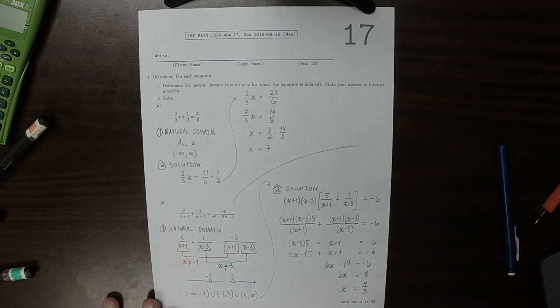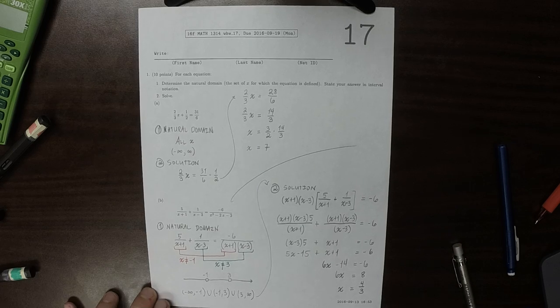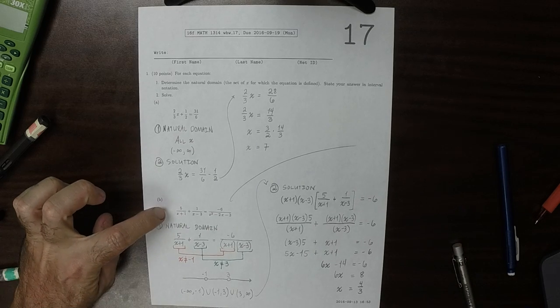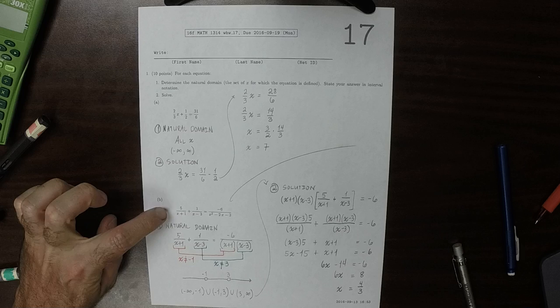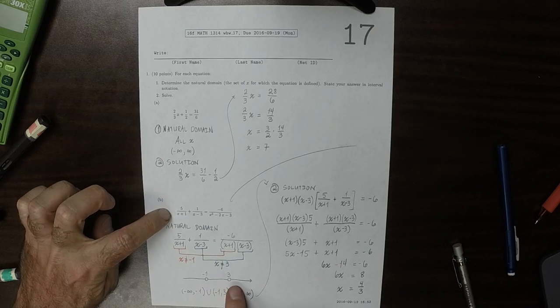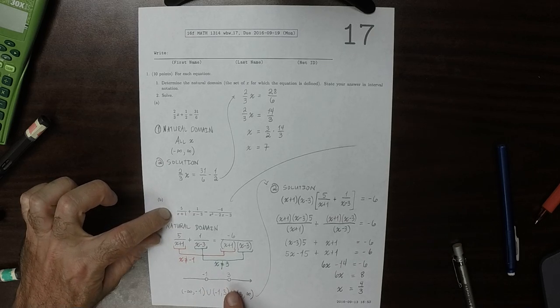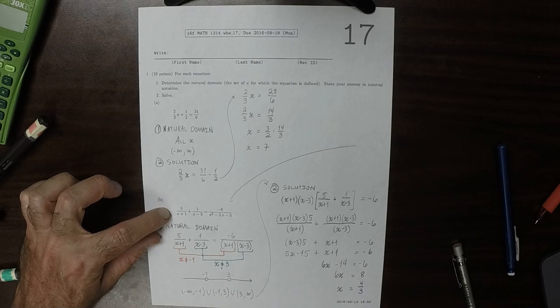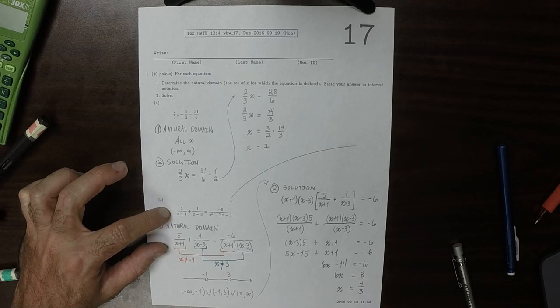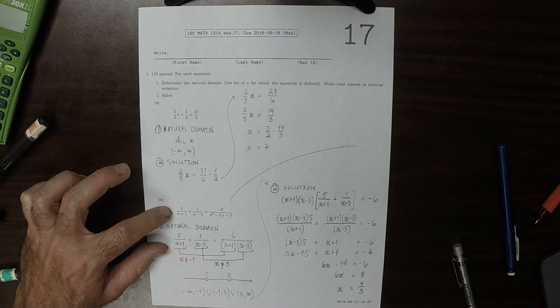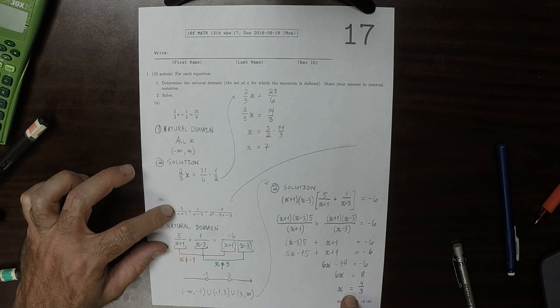So the meaning of this is that this equation that we started with, it is not possible to plug in negative 1, it is not possible to plug in 3, but you could plug in anything else. However, the only time that this equation is going to evaluate true is when you plug in x's 4 thirds. Every other time it will be false.